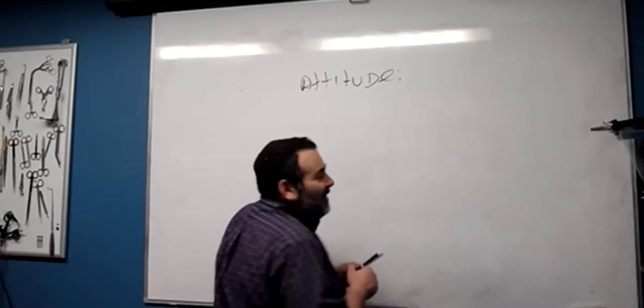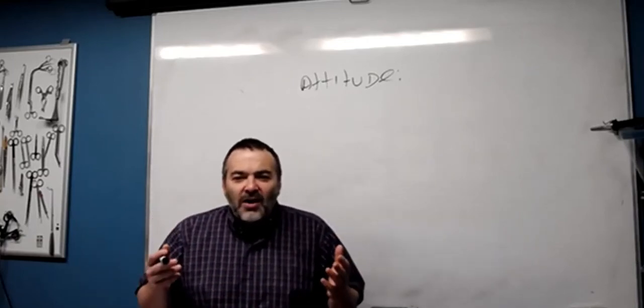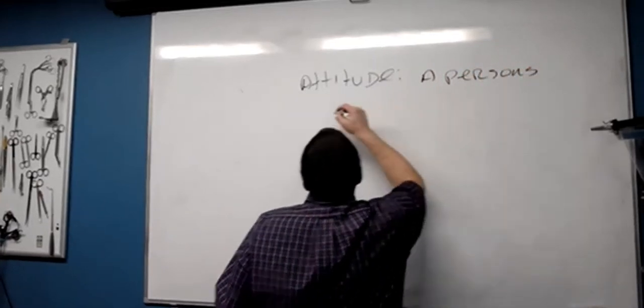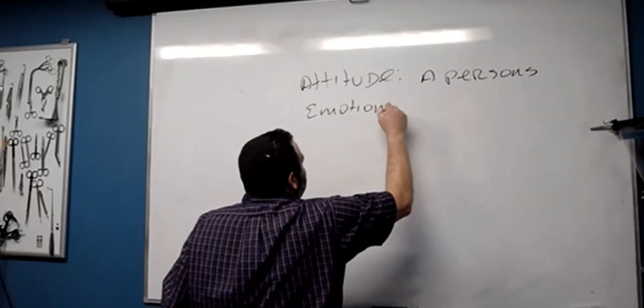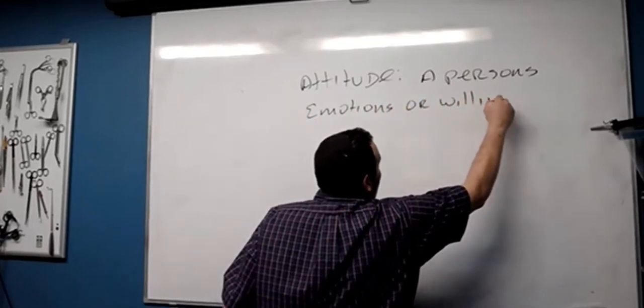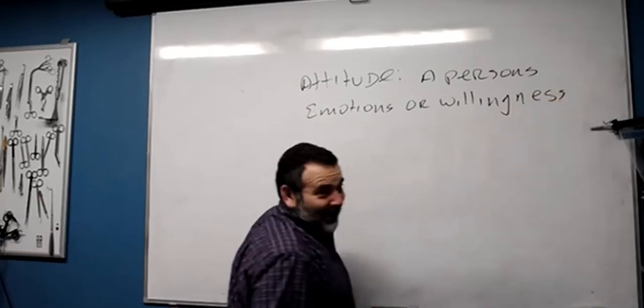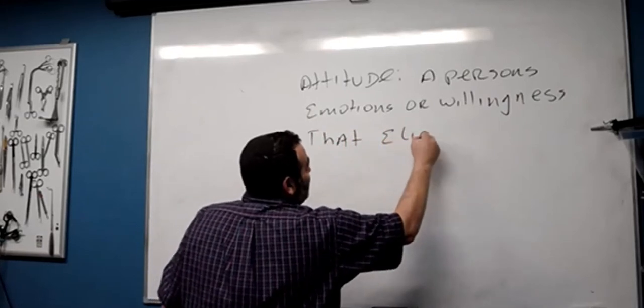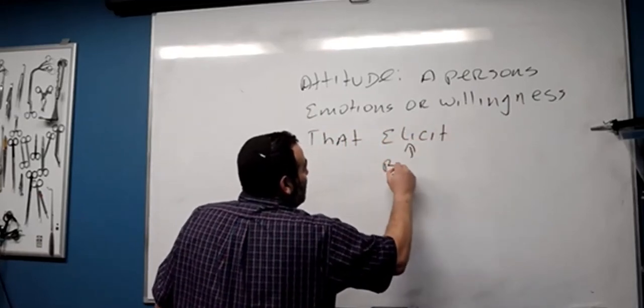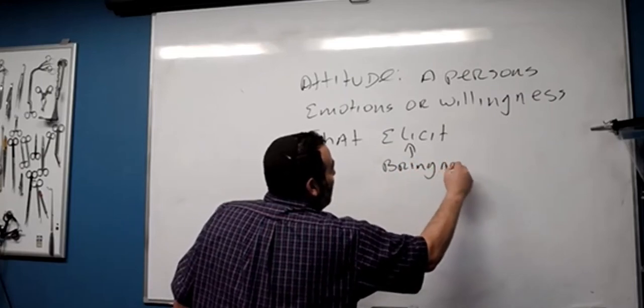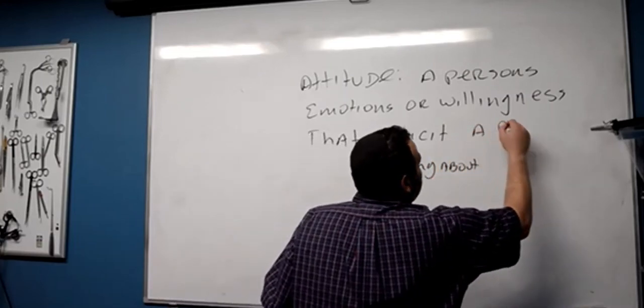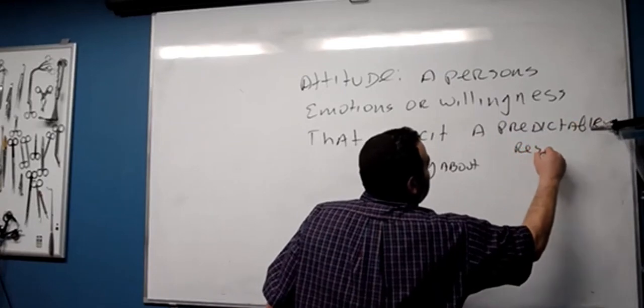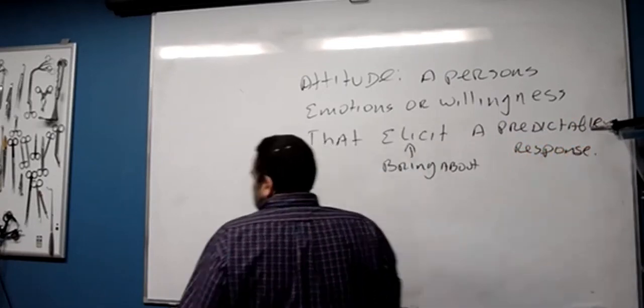Attitude is a person's emotions or willingness that elicit a predictable response. I'll write that down, but you have an understanding and you can watch this on video. A person's emotions or willingness, or really unwillingness, that elicit... and the word elicit means bring about... a predictable response. That's what an attitude is according to the book.